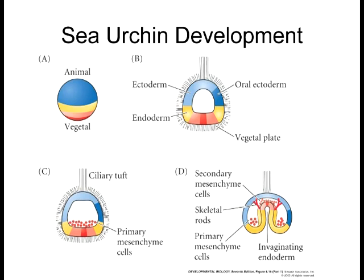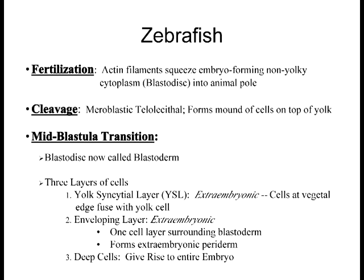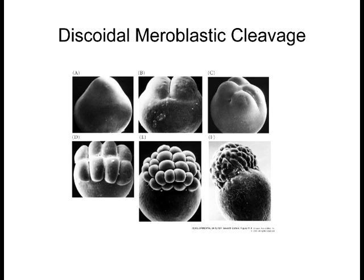In zebrafish, one of the events after fertilization is that actin filaments — part of the cytoskeleton — actually squeeze a portion of the oocyte, forming a non-yolky area at the animal pole. That is where the embryo undergoes cleavage. It's meroblastic because cleavage only occurs in that small area; it doesn't encompass the entire yolk. Instead, it squeezes so that you get this little bubble forming on top.